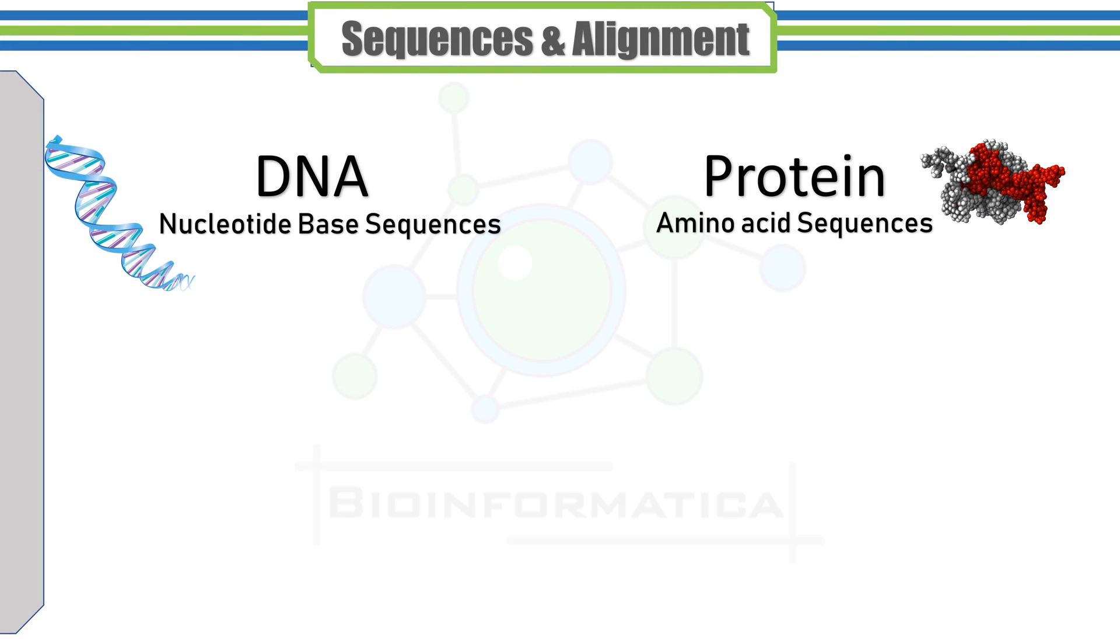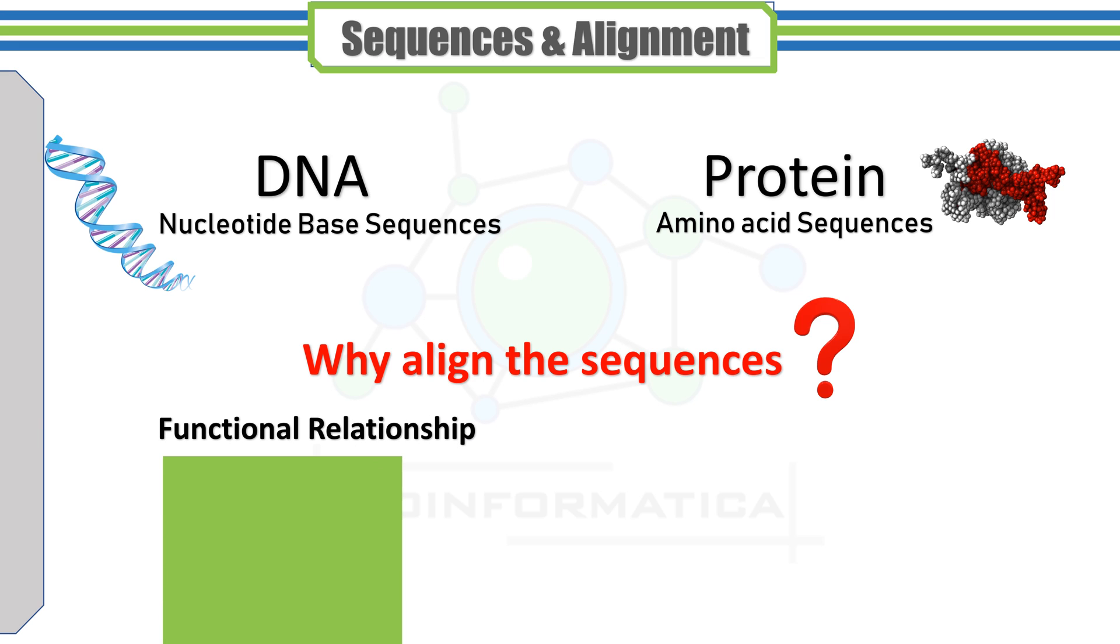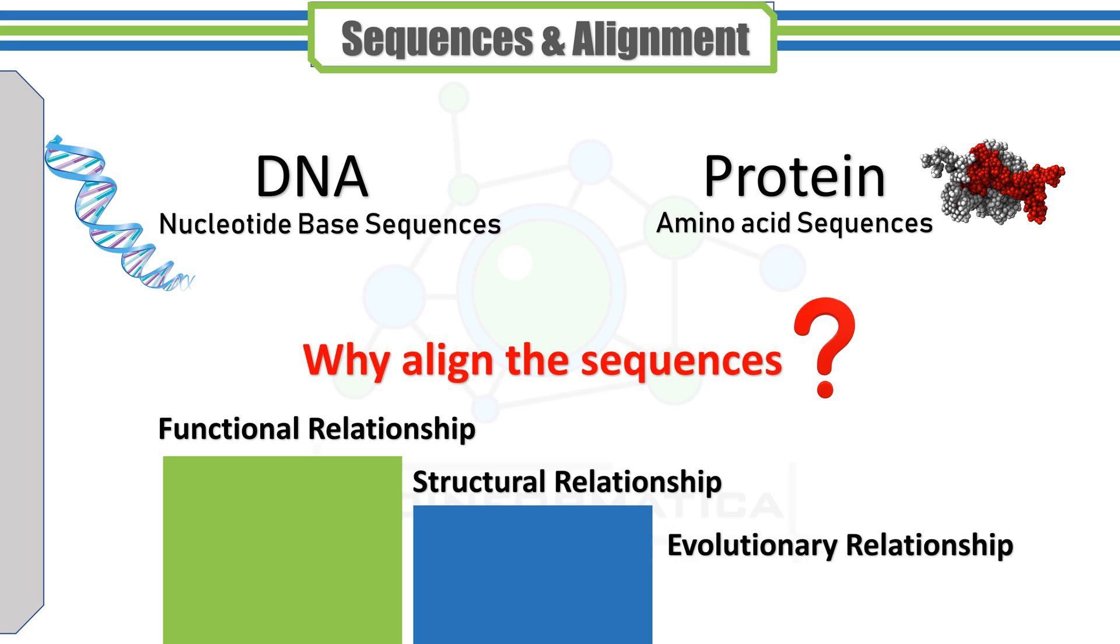In bioinformatics we generally deal with two types of sequences: DNA or RNA, which are sequences of nucleotide bases, and proteins, which are sequences of amino acids. Why do we perform sequence alignment? In simple words, sequence alignment is the most efficient and simple way to determine the functional, structural, and evolutionary relationships between sequences. You can learn more about sequences and alignment techniques by watching our previous videos by clicking on this i button, or the link in the description below.